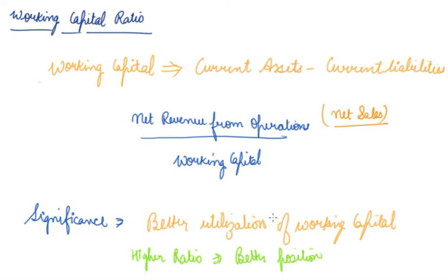A higher working capital turnover ratio shows efficient use of working capital and quick turnovers of current assets, whereas a low working capital turnover ratio indicates underutilization of working capital. However, a very high turnover ratio is also dangerous — it is a sign of overtrading and doing business with too little working capital, indicating a shortage that may put the concern in financial difficulties. So working capital should be at moderate levels — neither very high nor very low.